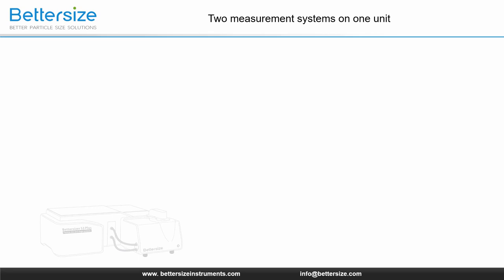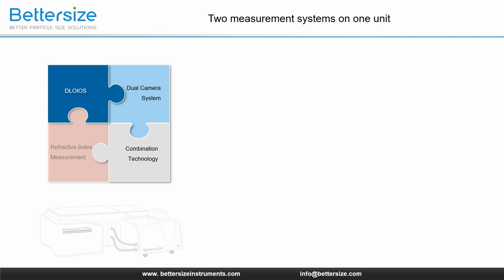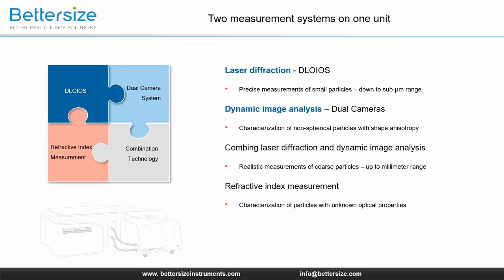The Betasizer S3 Plus incorporates both laser diffraction and dynamic image analysis — in other words, two measurement systems are installed on one unit. You can use laser diffraction only, dynamic image analysis only, or use these two methods simultaneously to characterize your sample depending on your application.